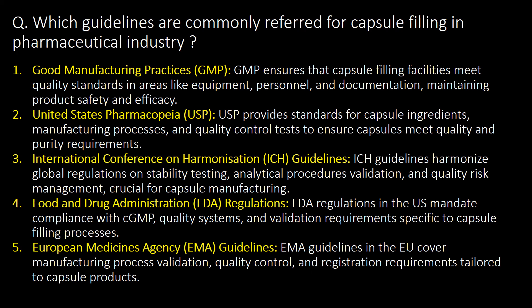Last and very important question: which guidelines are commonly referred to for capsule filling in the pharmaceutical industry? Here is the list of the top five guidelines commonly referred to for capsule filling in pharma industry. These are: first, GMP (Good Manufacturing Practices); second, USP (United States Pharmacopoeia); third, ICH guidelines; fourth, FDA regulations; and fifth, EMA guidelines.